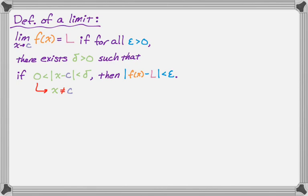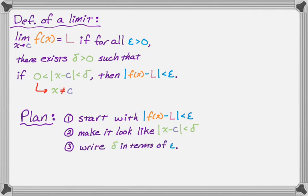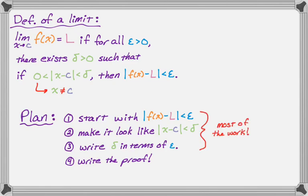Let's talk about a plan. We're going to start with the absolute value of f of x minus L is less than epsilon, and make it look like the absolute value of x minus c is less than delta by algebraically manipulating it. Then we'll write delta in terms of epsilon. After that, we write the proof. The key thing is that almost all of the work is in those first steps — the proof itself is very straightforward once you figure out that relationship.